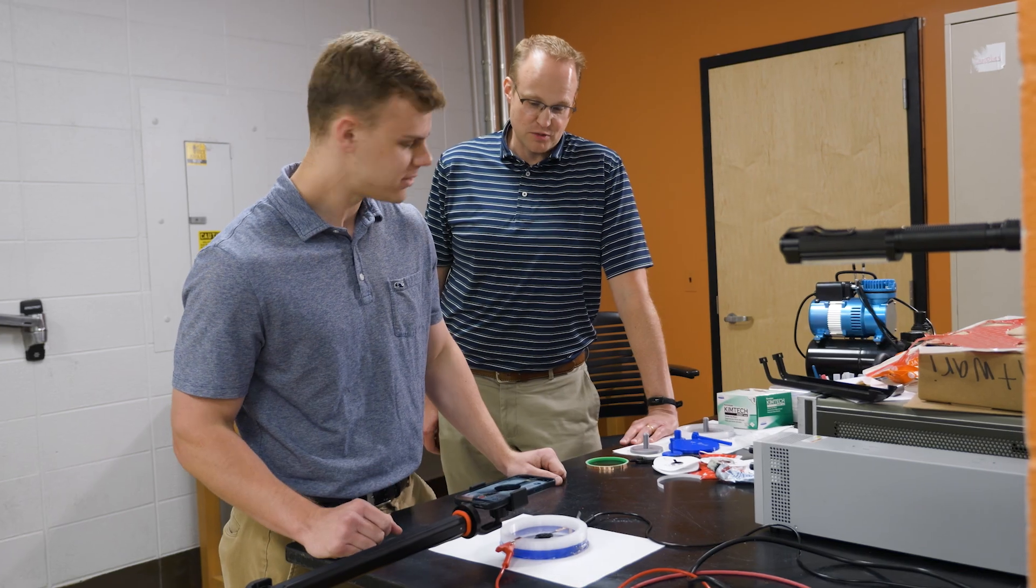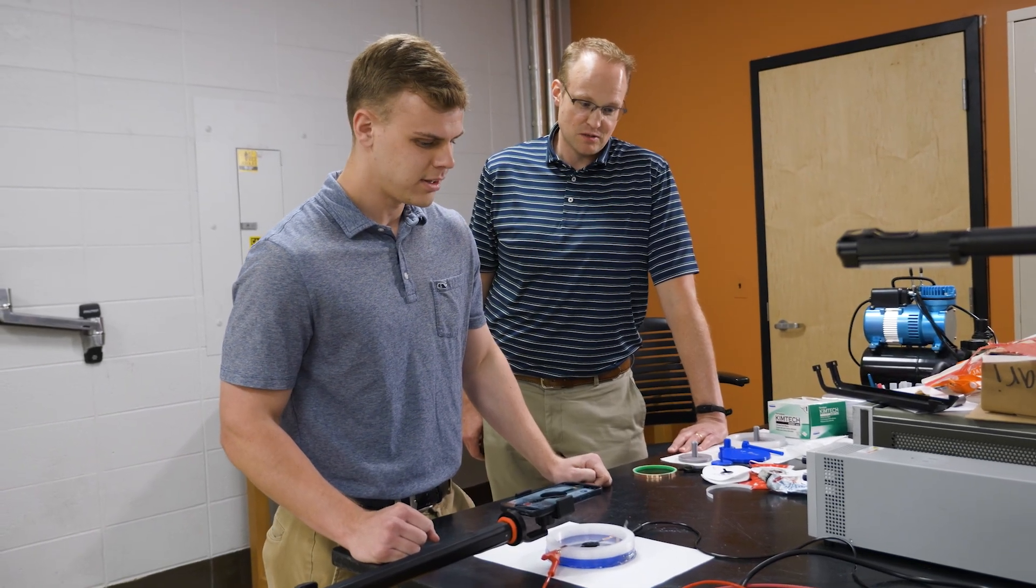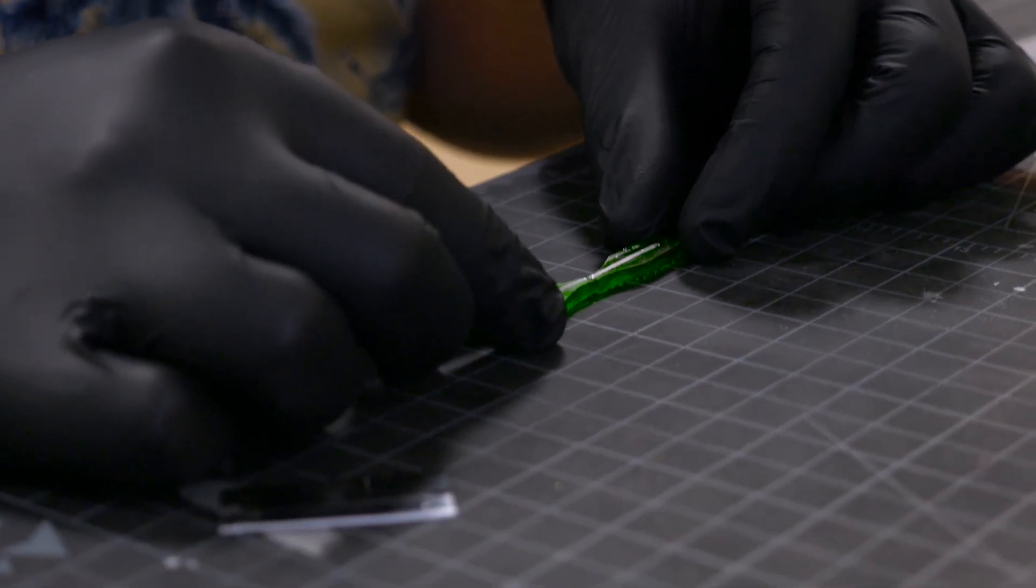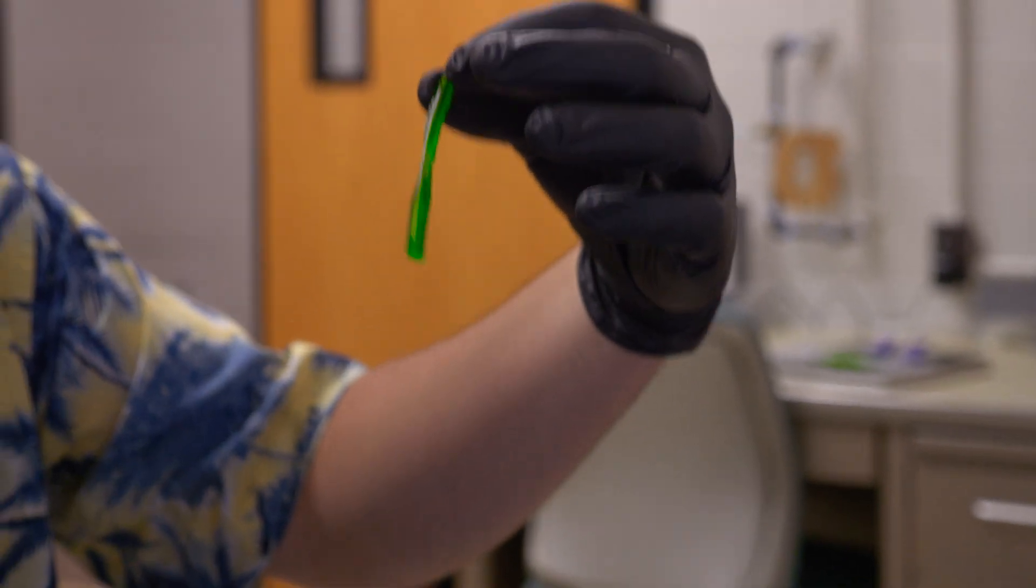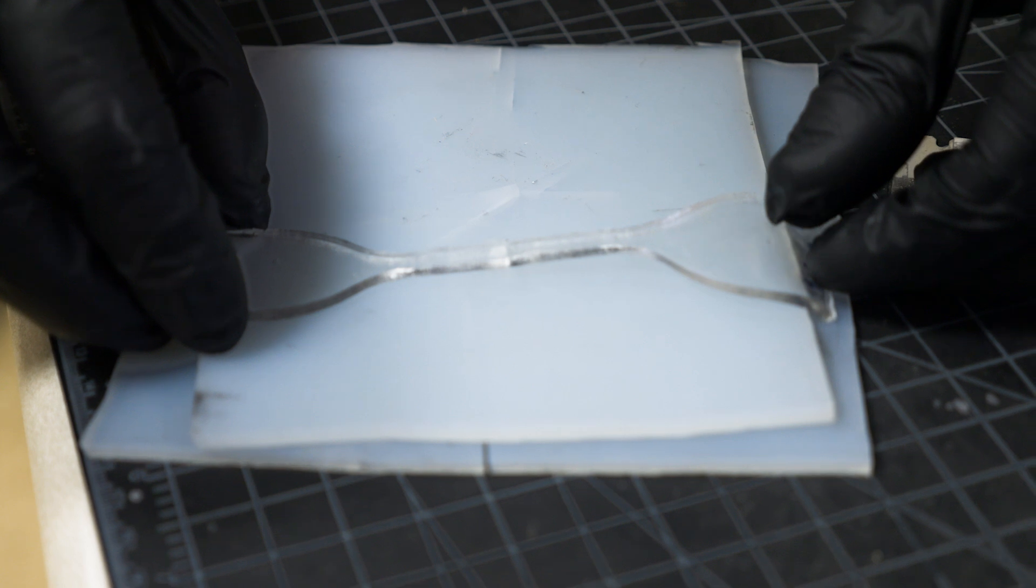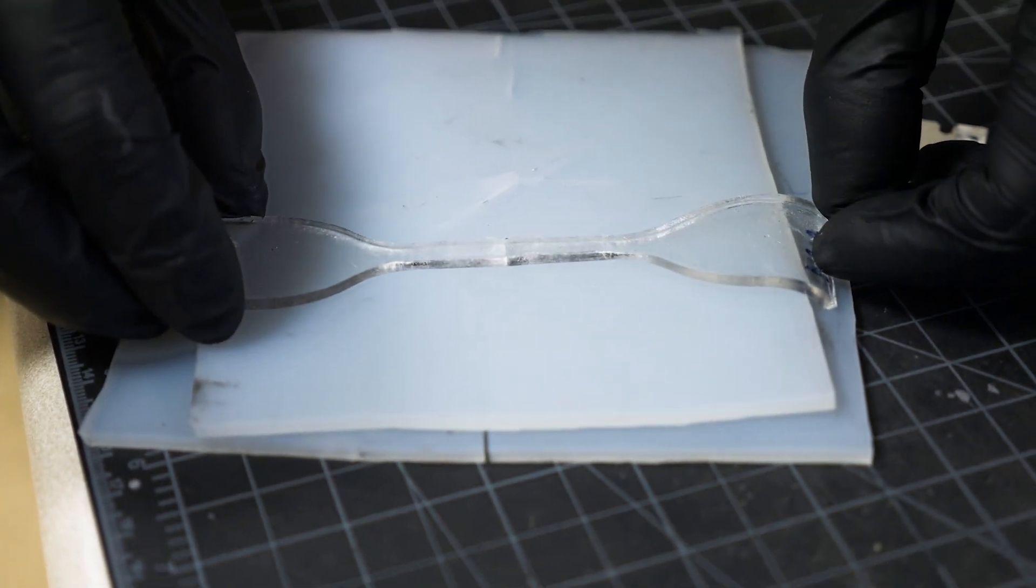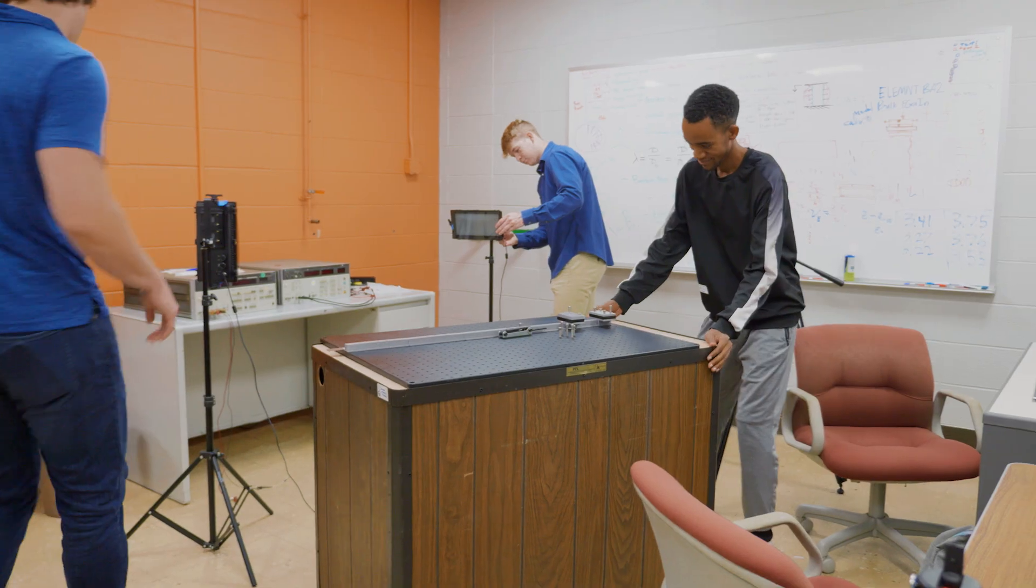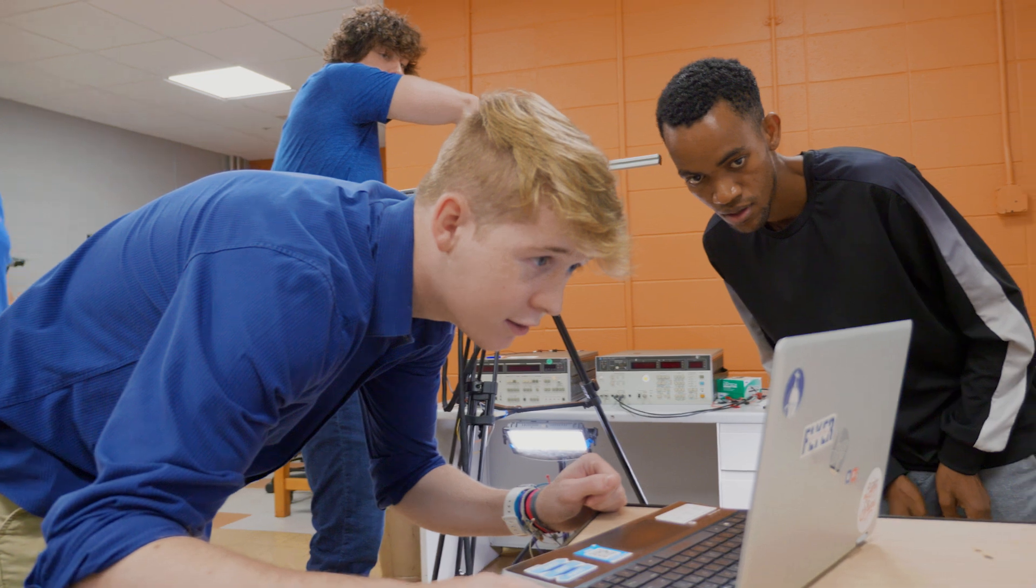We have a lot of projects going on in the lab. We look at materials ranging from funky stuff like self-healing elastomers—so think rubber bands and softer materials that can heal if you damage them, kind of like biological tissue—all the way over to additively manufactured metals.